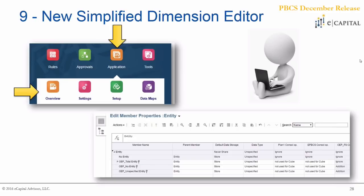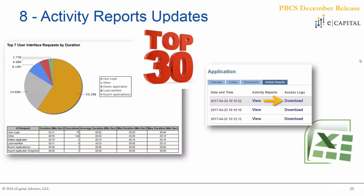Moving on to number nine is the new simplified dimension editor. This is important for a couple of reasons — much like the simplified interface, it's very important because it's going to be the only way you can maintain your metadata within your application. On top of that, the ability to navigate within your hierarchies the same way you would within Smart View makes it a lot easier to navigate your metadata and make necessary updates. Plus, a lot of drag-and-drop and copy-paste functionality is available, which really enables administrators to maintain metadata in a simplified way.